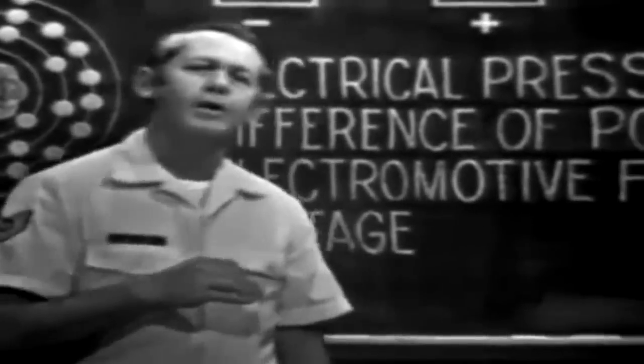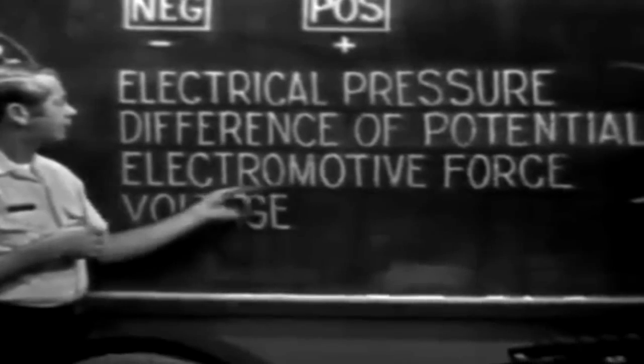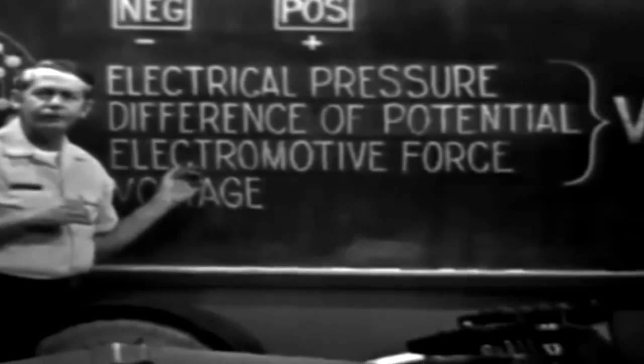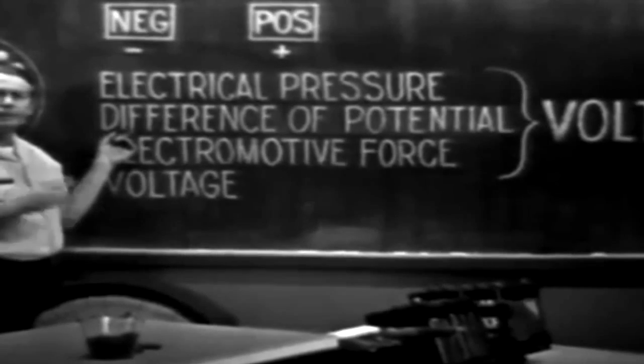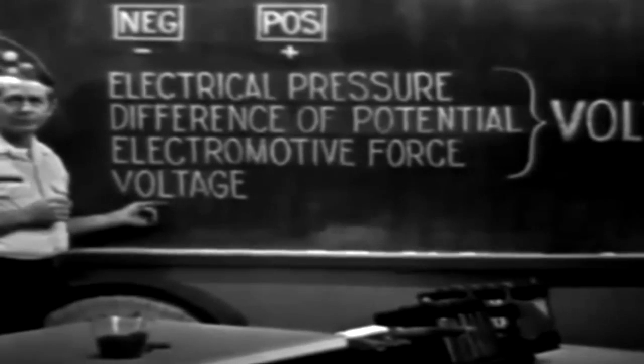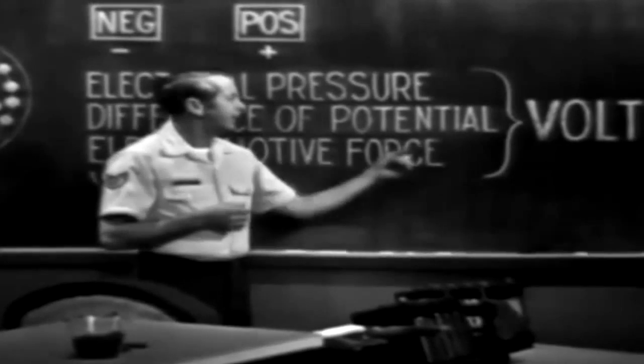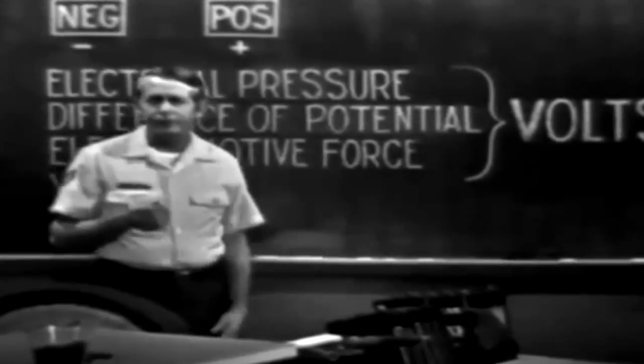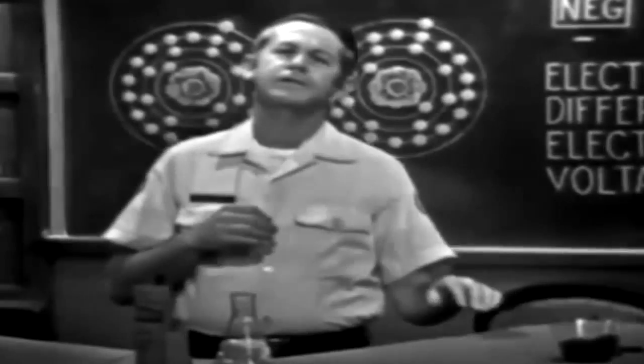Now this force is called an electromotive force or an EMF. It's electromotive because it motivates electrons to move. Other terms used to identify the force are electrical pressure, difference of potential. But you'll probably see this one used most often: voltage. Now regardless of the term used to identify the force, the unit of measure is identified as volts. I'm sure you've heard the expression, a six volt battery or 110 volt output. Well in this discussion we're going to see some of the common ways of producing an EMF or voltage. Now keep in mind that the basic requirement is to develop two charges. One positive, the other negative.